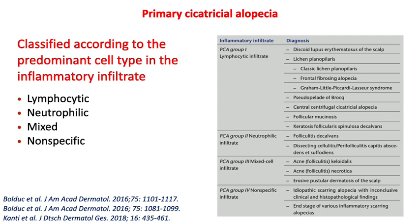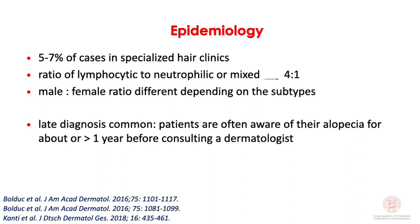Primary cicatricial alopecia has a low frequency overall. The ratio of lymphocytic to neutrophilic or mixed is 4 to 1, and the male-to-female ratio differs depending on the subtypes. Usually, we arrive very late to the diagnosis of cicatricial alopecia — almost one year before patients start to consult a dermatologist.